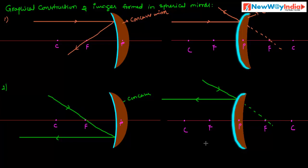So Rule 2 states: if a ray of light passes through the principal focus — in the case of a concave mirror, after reflection it will travel parallel to the principal axis; in the case of a convex mirror, if directed towards the principal focus, after reflection it will also travel parallel to the principal axis.